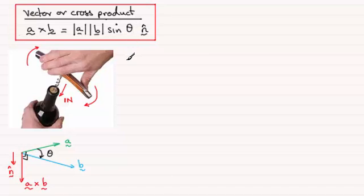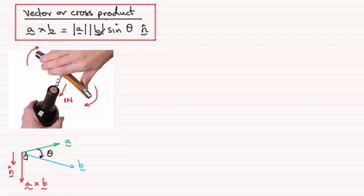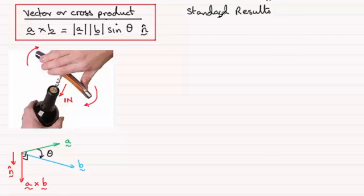The vector cross product does have uses. One of the uses we'll be seeing is finding the shortest distance between two lines, finding volumes of various solids, and also working with planes. So it's a very useful tool to have. Before we get to that, I want to look at some standard results, working with the unit vectors i, j, and k.